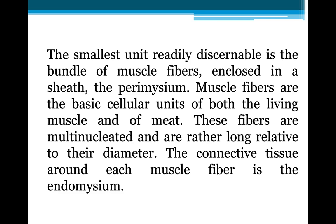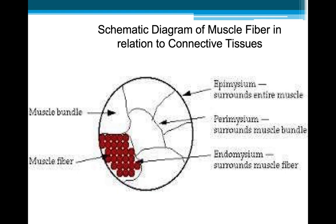Muscle fibers are the basic cellular unit of both the living muscle and of the meat. These fibers are multi-nucleated and are rather long relative to their diameter. The connective tissue around each muscle fiber is the endomysium layer. Here is a schematic diagram of muscle fiber in relation to its connective tissue. The muscle fibers are surrounded by the endomysium layer, then multiple muscle fibers are put together to form a muscle bundle covered in perimysium.